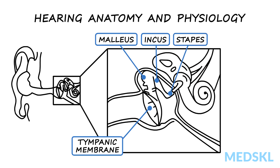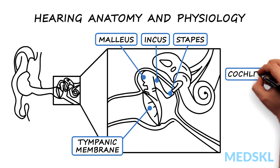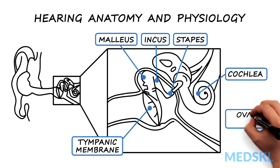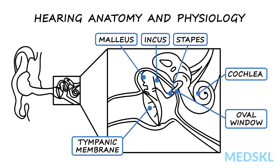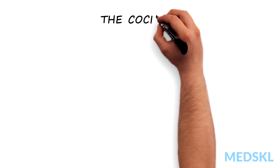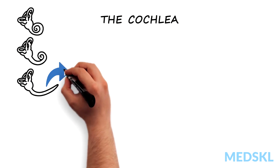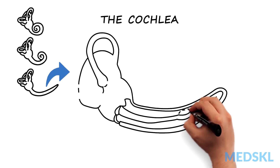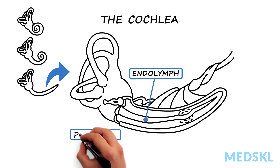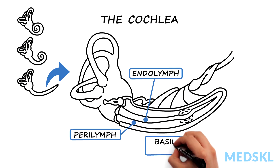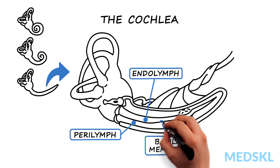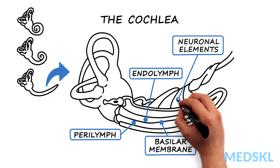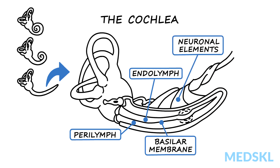The ossicular chain amplifies the sound energy that is transmitted to the cochlea through the oval window. The cochlea is a spiral-shaped structure that contains the fluid compartments of endolymph and perilymph, the basilar membrane, and the neural elements that transduce sound energy into neuronal impulses.